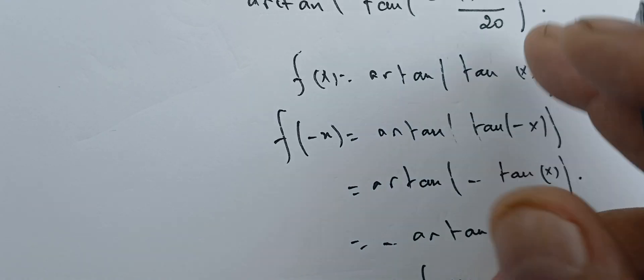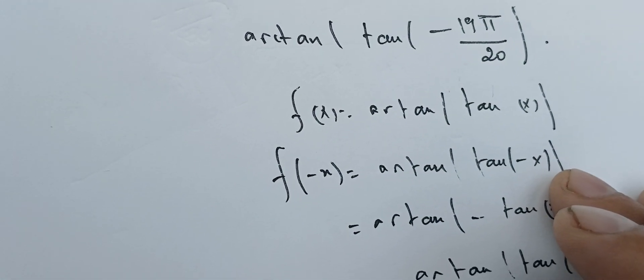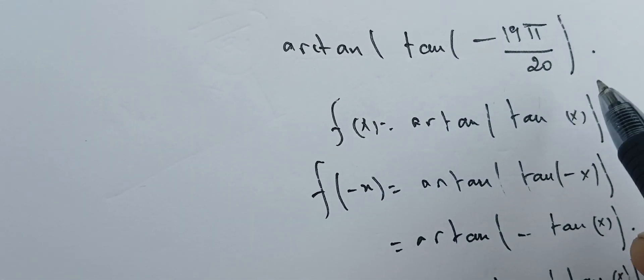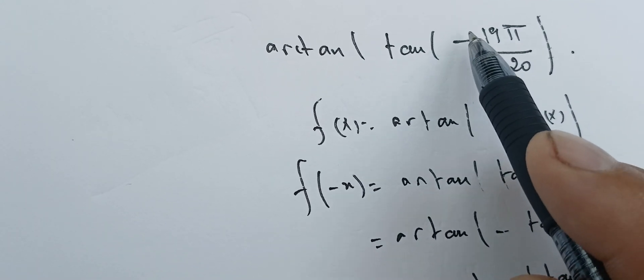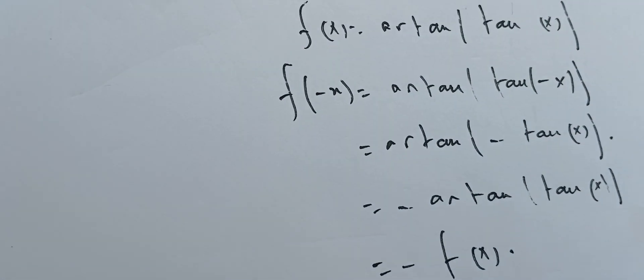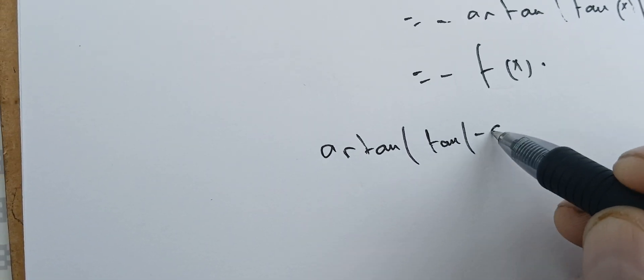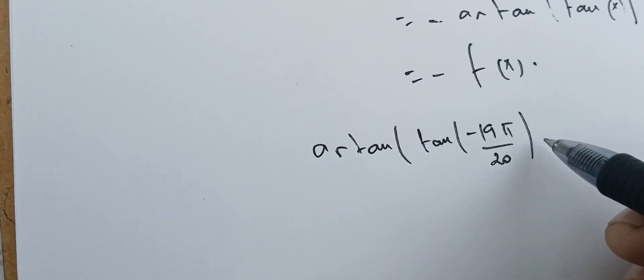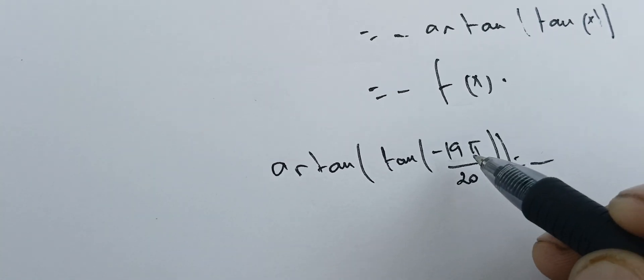Therefore, when we represent this function, we can work only on (0, π/2) if we want. After that, we take the symmetric with respect to the origin to get the (-π/2, 0) representation. For us, we want to find this value here. Because this function is odd, we take the minus outside. So we have minus arctangent of tangent of 19π/20.